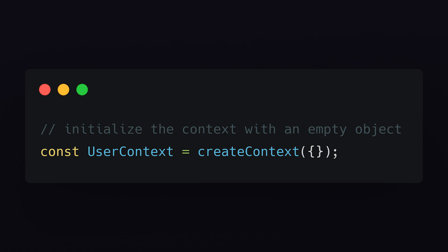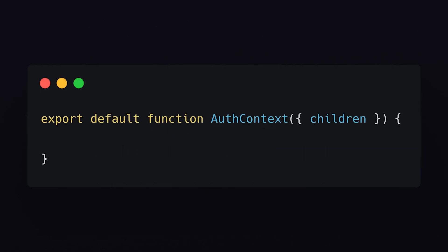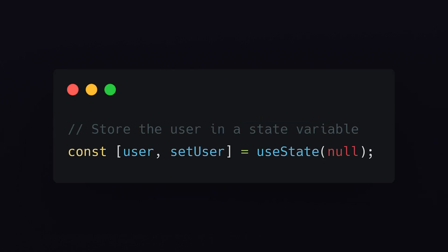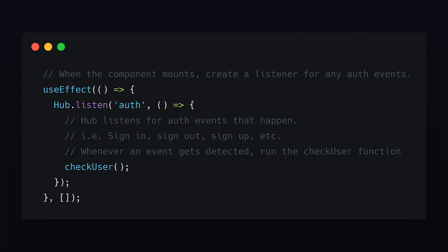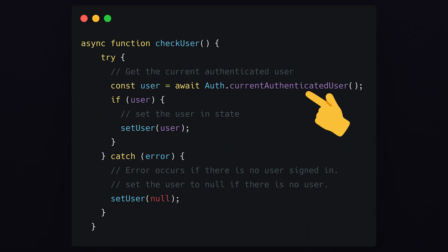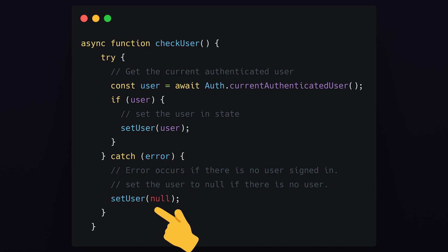We'll create a new context with the createContext function and pass it an empty object as the default value. We'll create another function called authContext, which accepts all of its children as props. Since we want to update all of our components if the user signs in or out, we'll store the user in a state variable and set it up with a null value by default. We'll create a useEffect to define a listener for any authorization events — such as signing in, signing out, or signing up — to trigger a checkUser function. The checkUser function tries to get the current authenticated user and set that user as the state variable. If it can't find the current authenticated user, that means they're either signed out or an error has occurred, and we'll just set the user to null.